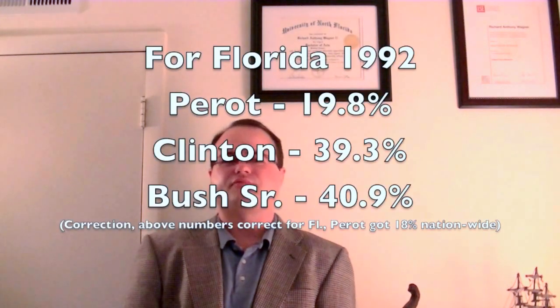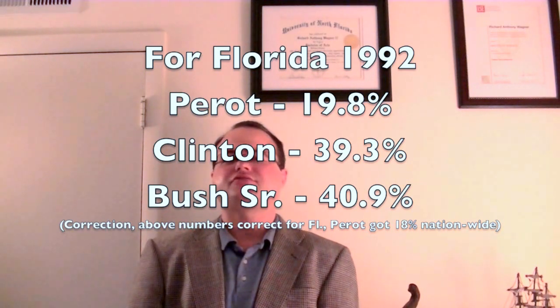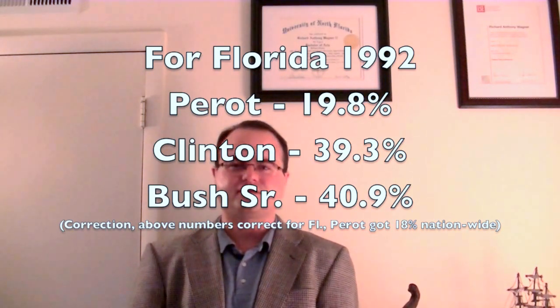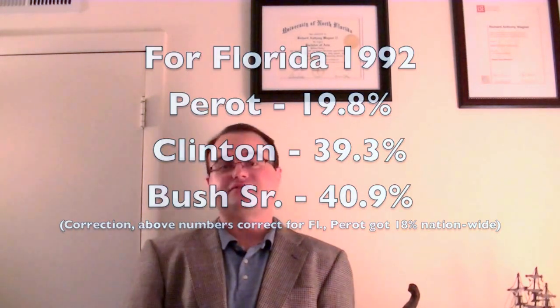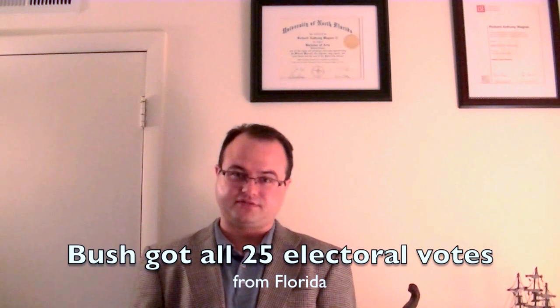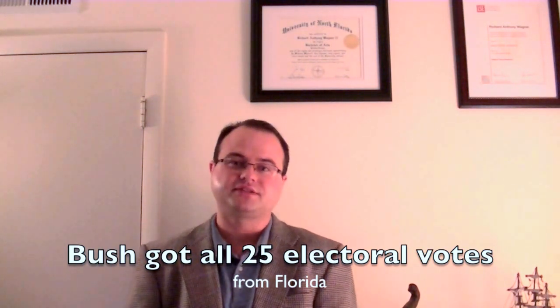In that three-way race, 18% went to Ross Perot, a little bit more went to Bill Clinton, and George Bush Sr. got the largest portion of Florida's popular vote, but it was only about 41%. Because it was the largest portion, however, George Bush Sr. got all of our electoral votes, even though he didn't even get a majority of Florida's popular vote.